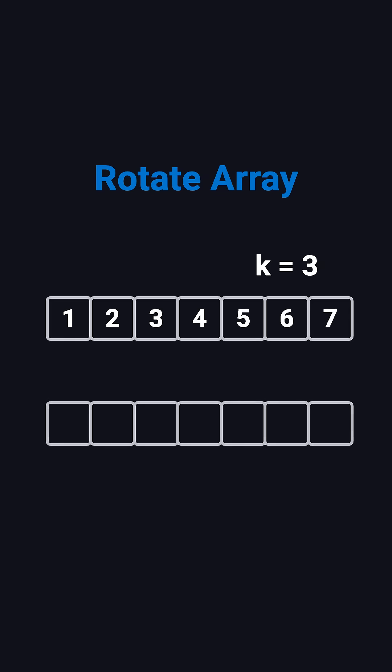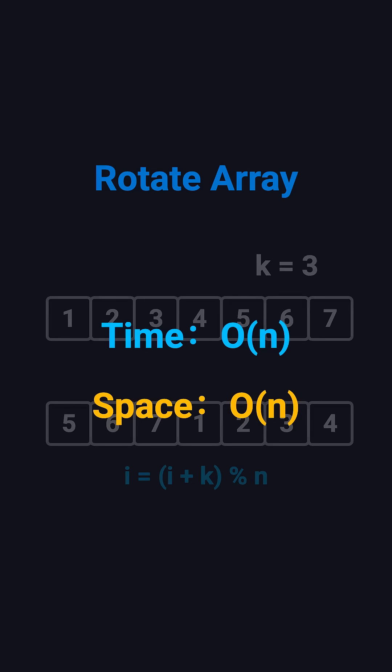The simplest approach is to create a new array. For each element at index i, place it at i plus k mod n. This runs in O(n) time, but also uses O(n) extra space.